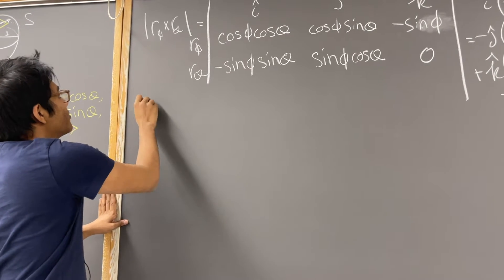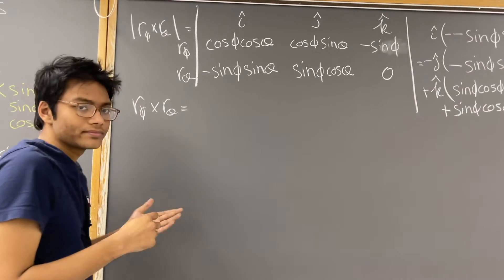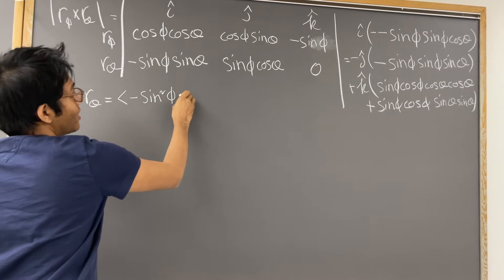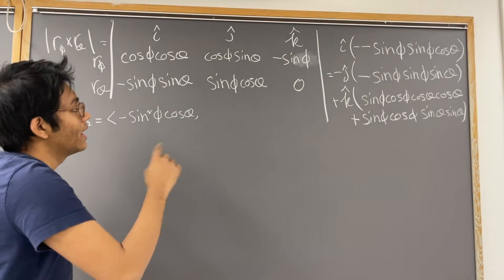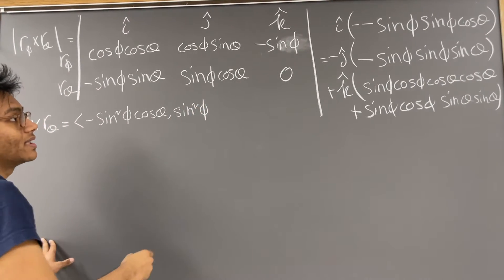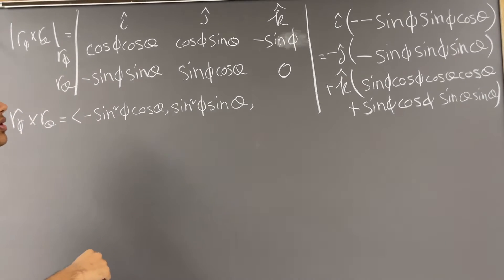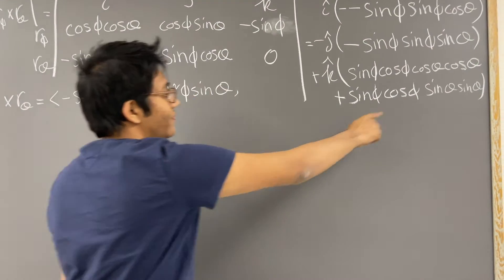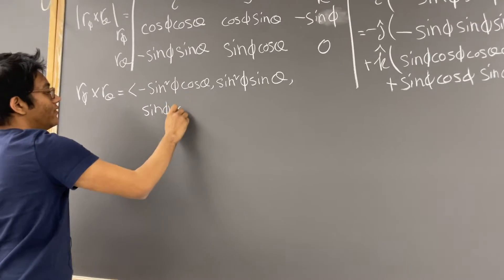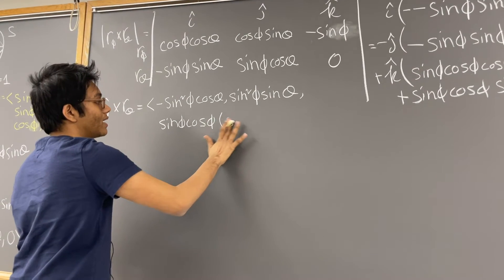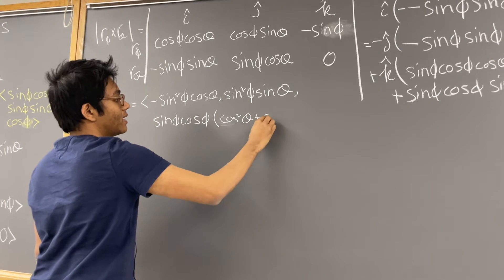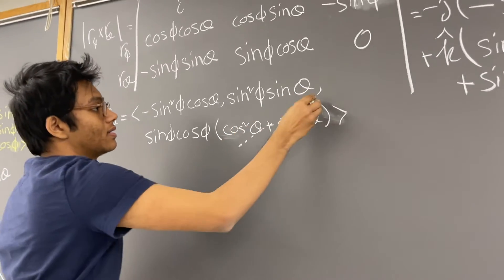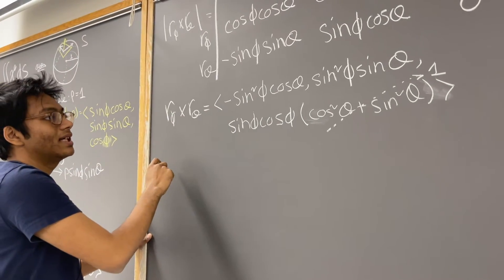Let's simplify. R sub phi cross r sub theta gives: i hat component is minus sine squared phi cosine theta, j hat component is sine squared phi sine theta, and for k hat we factor out sine phi cosine phi and get cosine squared theta plus sine squared theta inside — and everyone loves that because that is just one. So k hat becomes sine phi cosine phi.